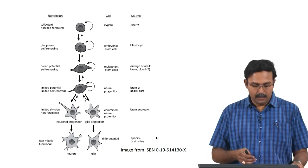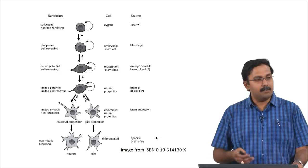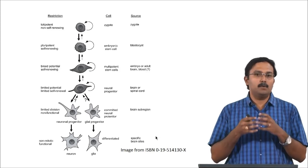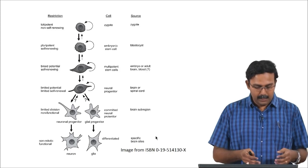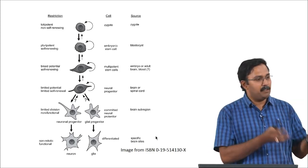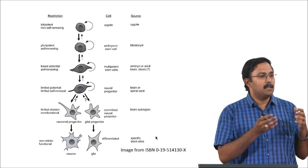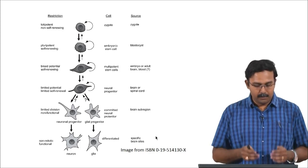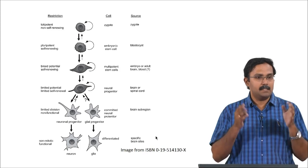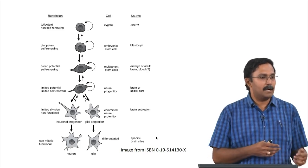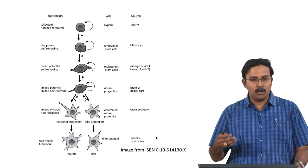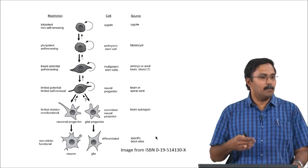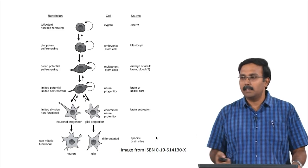It can still go back a stage, and here it forms some kind of a progenitor — the example given is for neural cells. It forms a neural progenitor, which is more committed towards one particular lineage. From here it divides where it becomes even more specific, forming either a neuronal progenitor or a glial progenitor. By this point it becomes almost irreversible — it is now committed to a particular lineage and cannot go back. Finally, it forms a neuron or a glia based on the conditions.